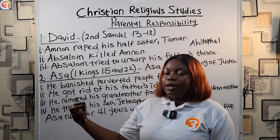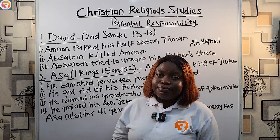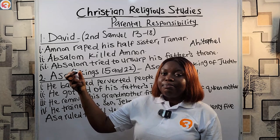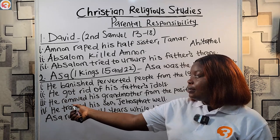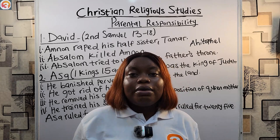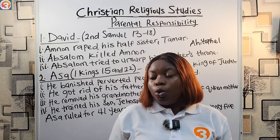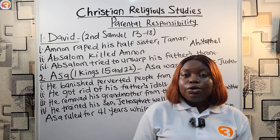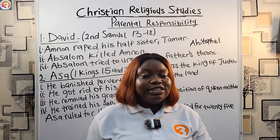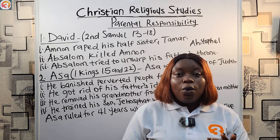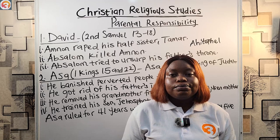In conclusion, in the last class we examined Samuel and Eli; today we've looked at David and Asa. God wants parents — as stated in Proverbs chapter 22 verse 6 — to train their children in the way they should go, and when they are old they will not depart from it. He also wants parents to correct their children with the rod if necessary, because it will save their souls. Parents should diligently teach their children the ways of God.